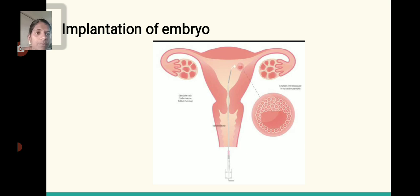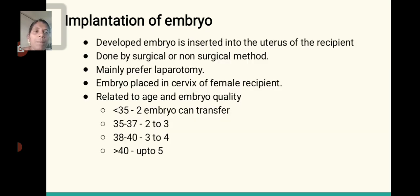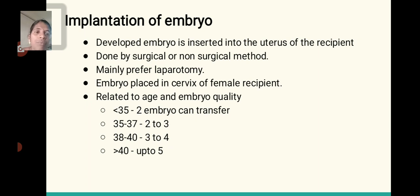Implantation of embryo: The developed embryo is inserted into the uterus of the recipient, done by surgical or non-surgical method, mainly using laparotomy. The embryo is placed in the cervix of the female recipient. Related to age and embryo quality: less than 35 years — 2 embryos transferred; 35 to 37 years — 2 to 3 embryos; 38 to 40 years — 3 to 4 embryos; greater than 40 years — up to 5 embryos transferred.